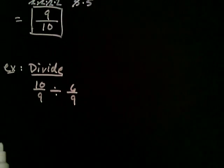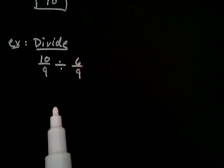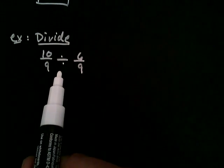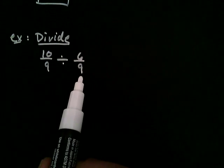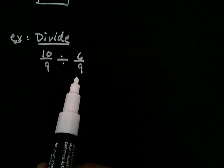So it turns out that division, the way you divide two fractions, is you change division to multiplication, and you take the reciprocal of the second fraction. And then you multiply like we did in the previous example.